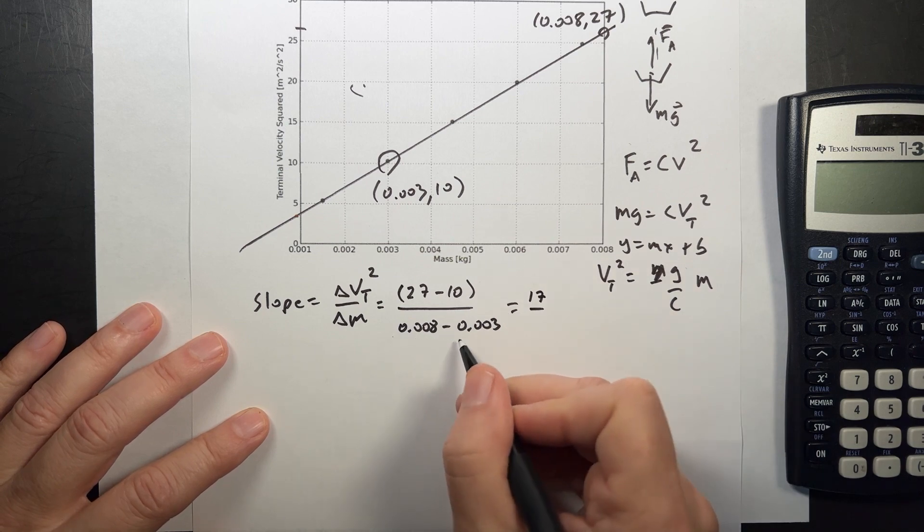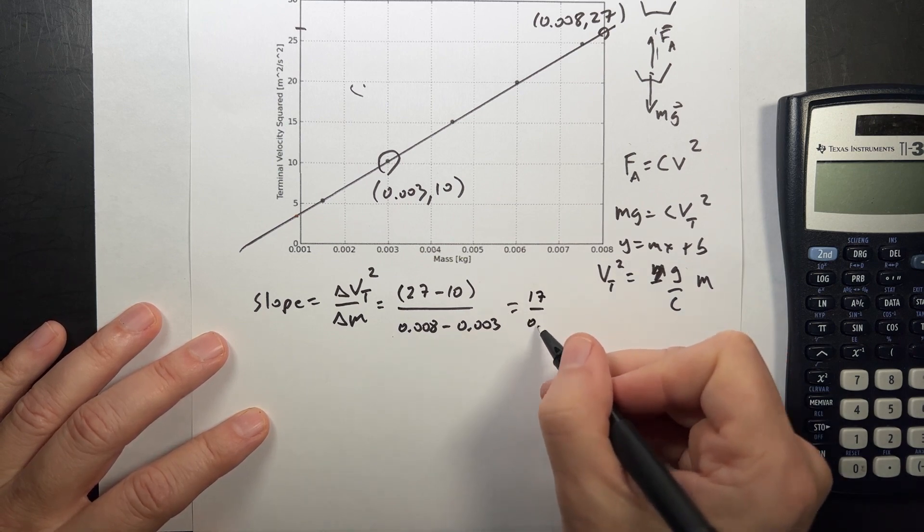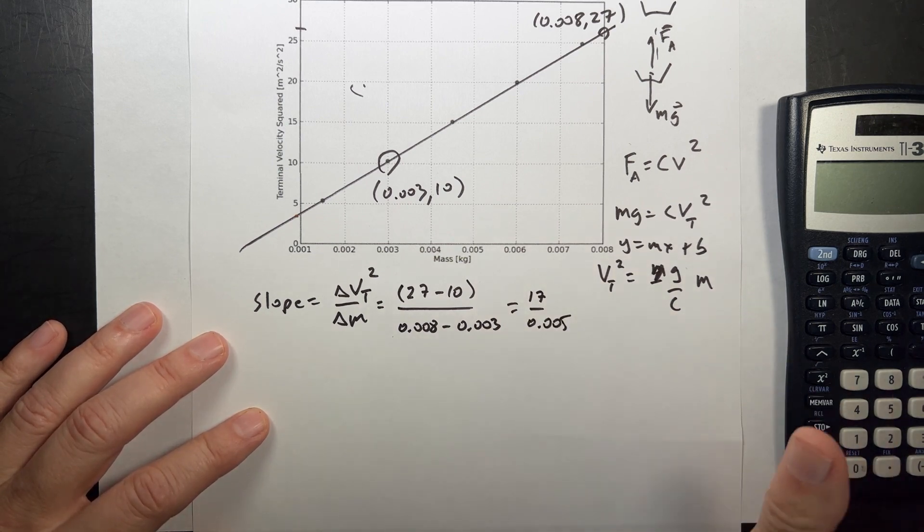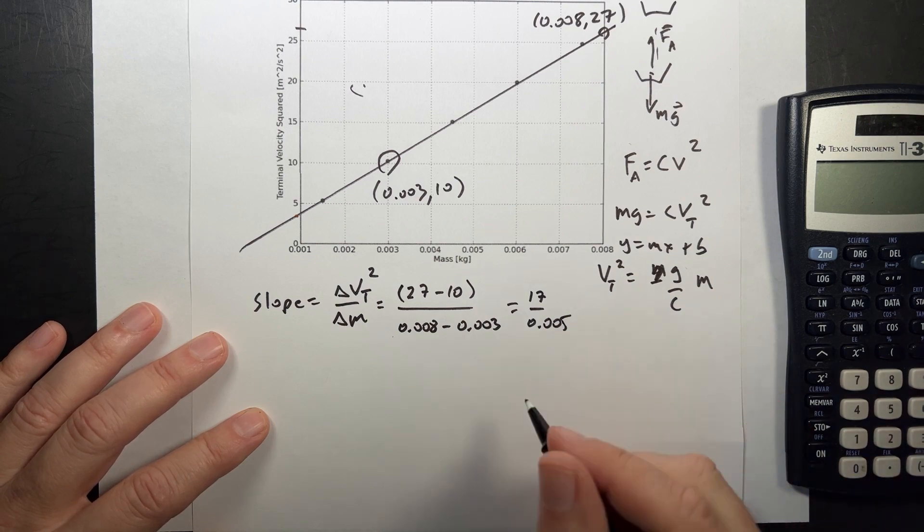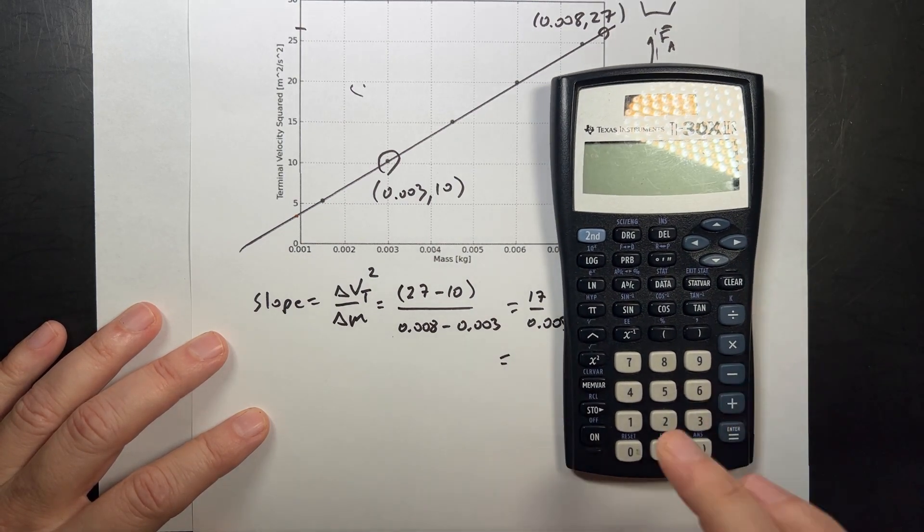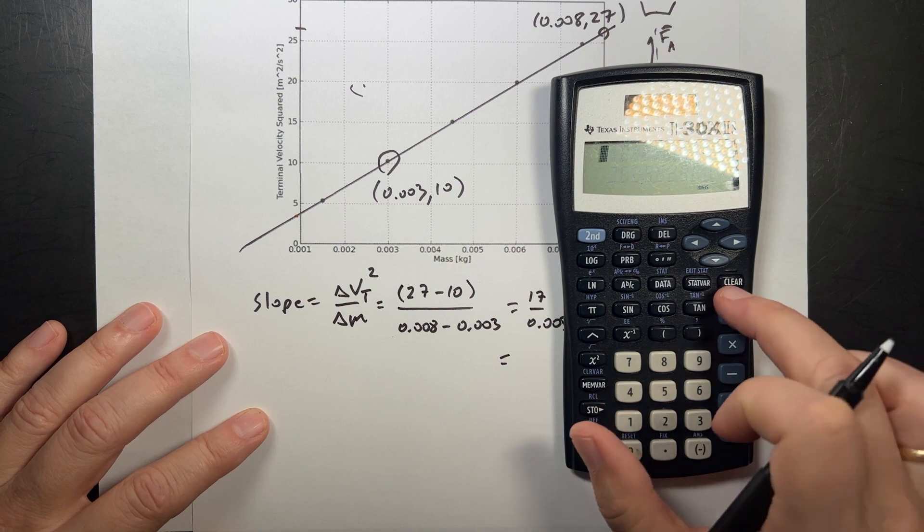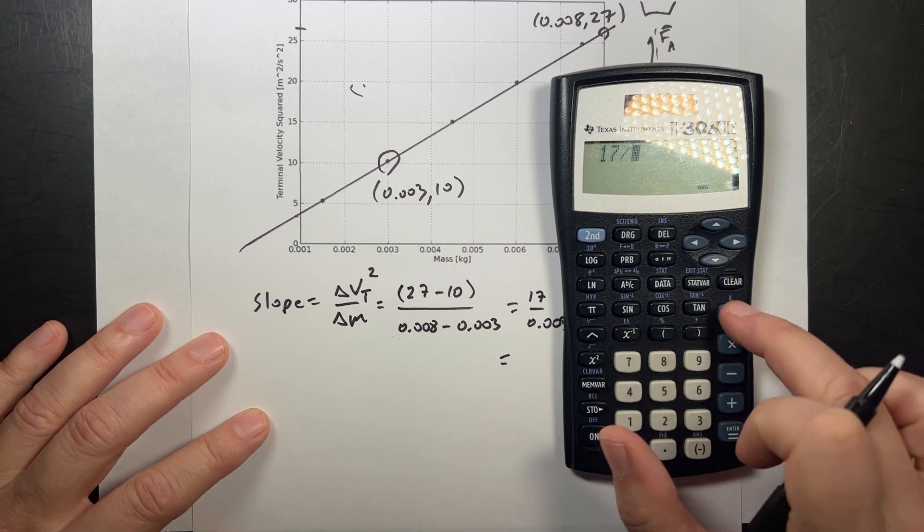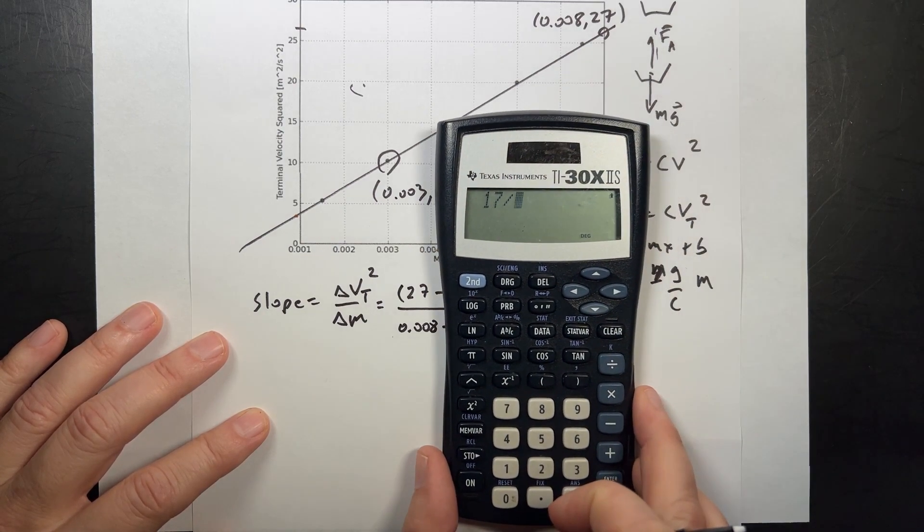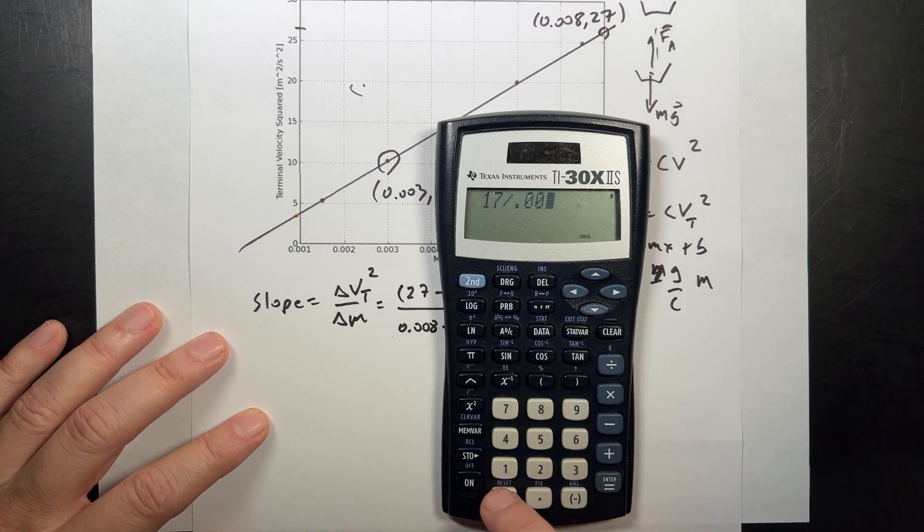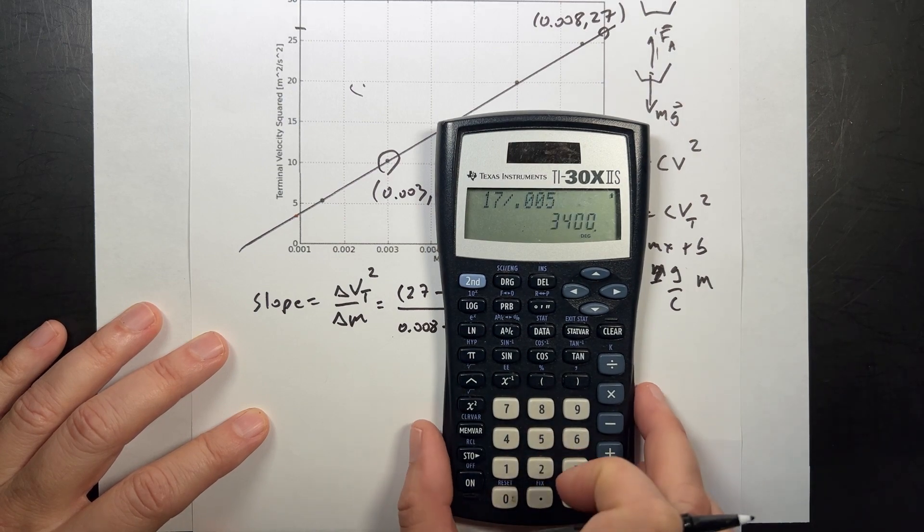I've got my handy-dandy calculator right there. I don't really need it too much, because this is going to be 27 minus 10 is 17, and 0.008 minus 0.003 is 0.005. You can put it in your calculator if you want to, but if you don't have to. So now, actually, I could do this too, but I'm going to do 17 divided by 0.005 equals 3,400.